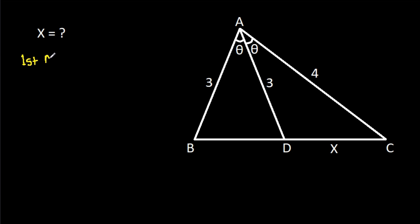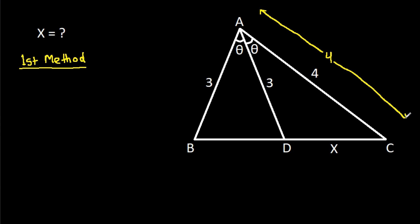The first method: we have AC is 4, and from point D, if we make a line DE such that AE is 3, then CE will be 4 minus 3, that will be 1.